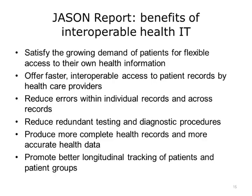In April 2014, the Jason Group published a report entitled A Robust Health Data Infrastructure. The Jason Group is an independent group of scientists that advise the federal government. This report helped shape the ONC interoperability vision. The Jason report listed the following benefits of interoperable health IT: 1. It can satisfy the growing demand of patients for flexible access to their own health information. 2. It can offer faster interoperable access to patient records by health care providers. 3. It can reduce errors within individual records and across records. 4. It can reduce redundant testing and diagnostic procedures. 5. It can produce more complete health records and more accurate health data, and promote better longitudinal tracking of patients and patient groups.